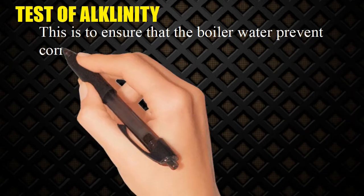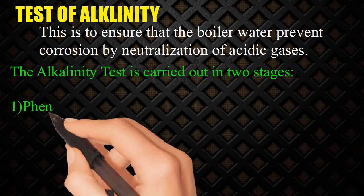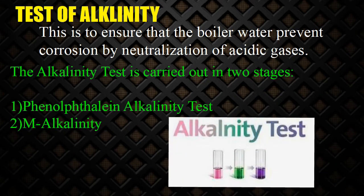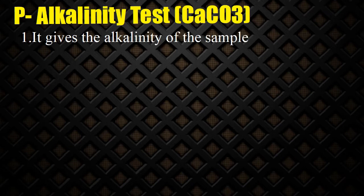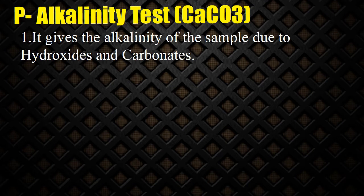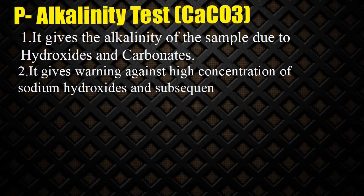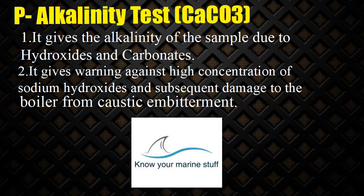Alkalinity test: This test ensures that the boiler water prevents corrosion by neutralization of acidic gases. The alkalinity test is carried out in two stages: (1) Phenolphthalein (P) alkalinity test and (2) M alkalinity test. The P-alkalinity test, expressed as CaCO3, gives the alkalinity of the sample due to hydroxides and carbonates, and warns against high concentration of sodium hydroxides and subsequent damage to the boiler from caustic embrittlement. Different test kits have different test procedures.